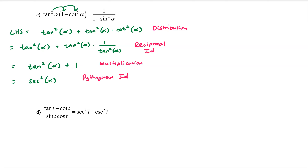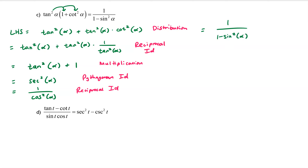Through a reciprocal identity, secant squared alpha becomes 1 over cosine squared alpha. Then using the Pythagorean identity, cosine squared can be rewritten as 1 minus sine squared alpha, giving us 1 over 1 minus sine squared alpha — which equals the right-hand side, so the proof is complete.